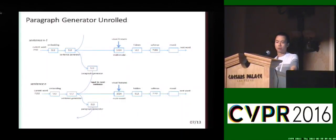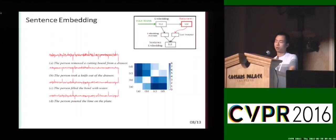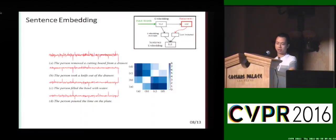This slide shows our paragraph generator. The output of the paragraph generator is used as the initial state for the sentence generator for generating the next sentence. We compute sentence embedding vectors and visualize several examples on our trained model. The first two sentences have very similar embedding vectors because they both involve an activity where the person removes something from a drawer. Similarly, the next two sentences have similar embeddings because they both involve pouring something into a container. A matrix of Euclidean distances between the four sentences confirms that we can learn meaningful sentence embeddings from training.